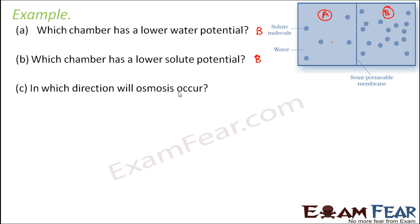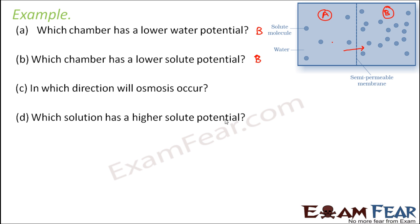In which direction will osmosis occur? Water will move from the region of higher potential towards the region of lower potential. So this would be the direction of osmosis — from A to B. Which solution has a higher solute potential? Since B has a lower solute potential, obviously A will have a higher solute potential.